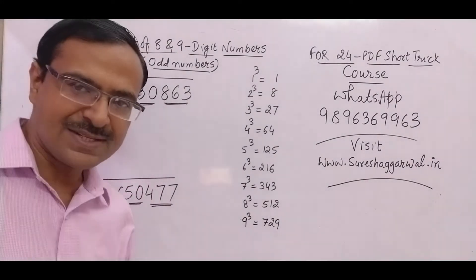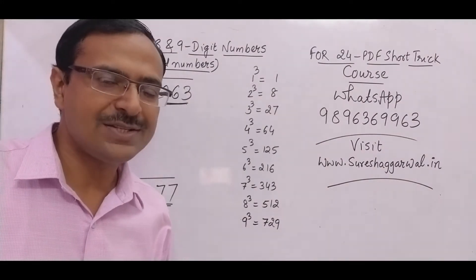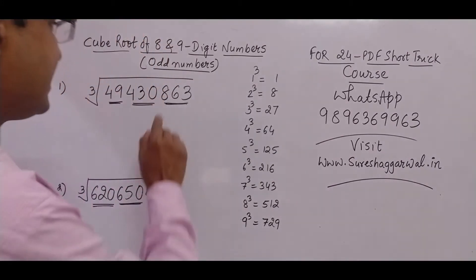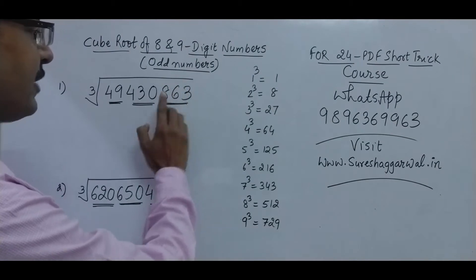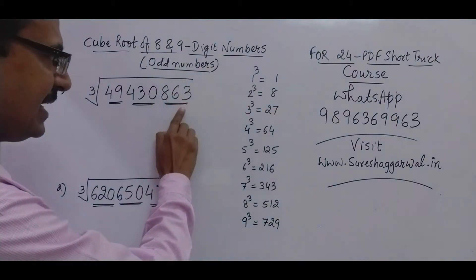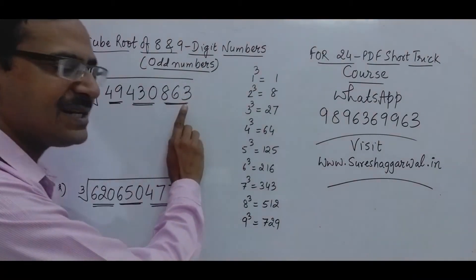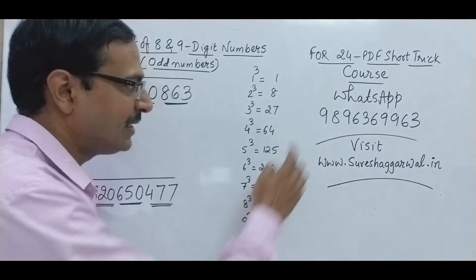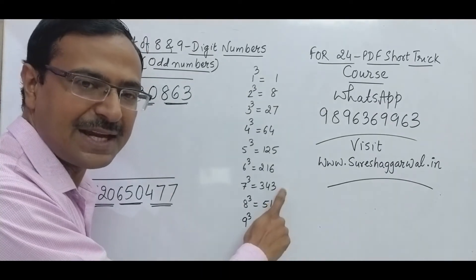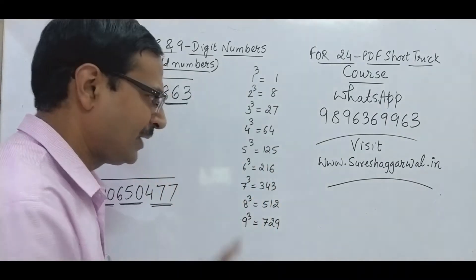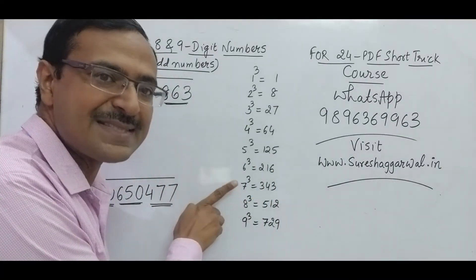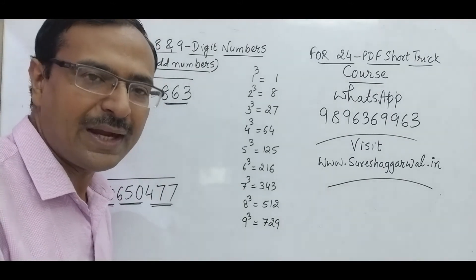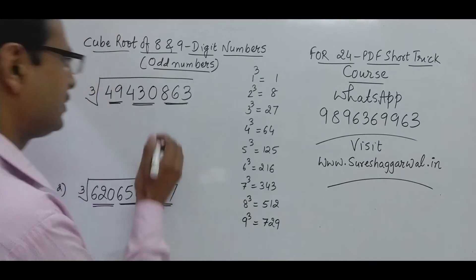The first step is to find the unit digit of our answer. Look at the unit digit of the rightmost triplet, 863 — it ends with 3. Which cube ends with 3? It is 343, which is 7 cubed. So my answer is going to end with 7. In place of this triplet, I place 7 in the answer.